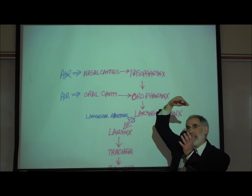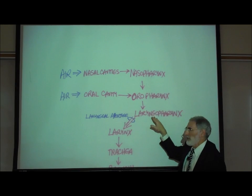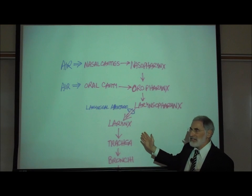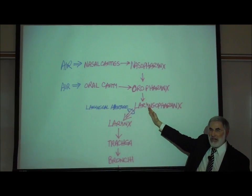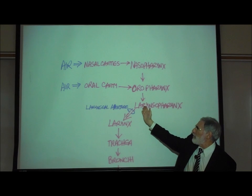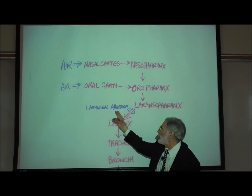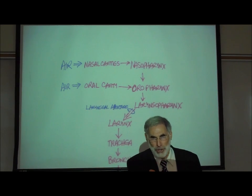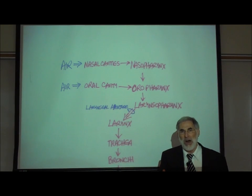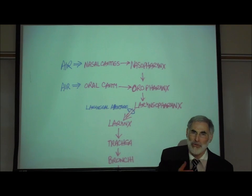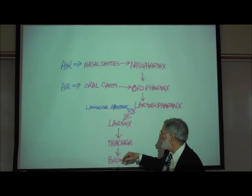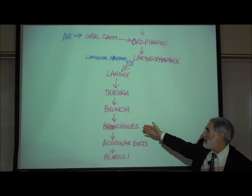The pharynx has three parts: the upper nasopharynx, the middle oral pharynx, and the lower laryngopharynx. Branching off the laryngopharynx are two passageways — one for food going down the esophagus to the stomach, and one for air flowing through the laryngeal aperture into the larynx or voice box. The air flows through a slit called the glottis between the vocal cords and then down the trachea through the bronchi.